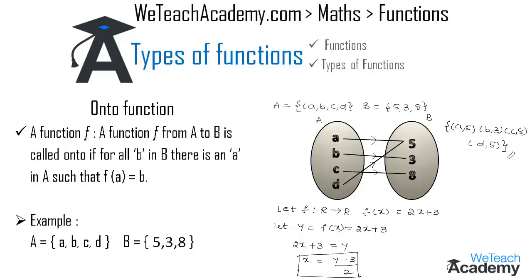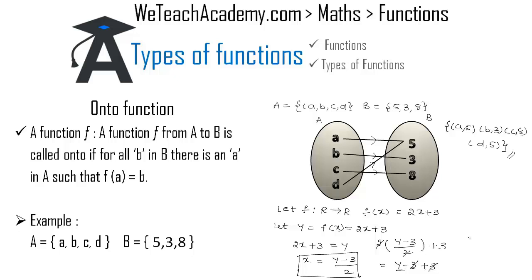Now let us substitute the value of x back into f(x). We get 2 × (y − 3)/2 + 3. The 2s cancel, giving y − 3 + 3. The −3 and +3 cancel, so f(x) = y. In this case, we say that f is an onto function.